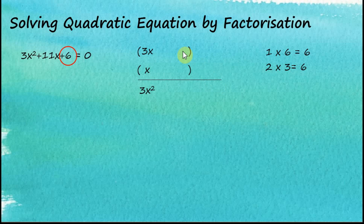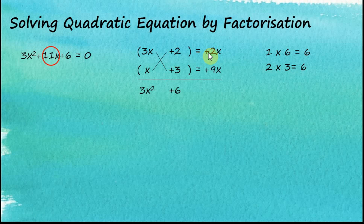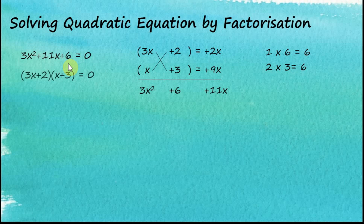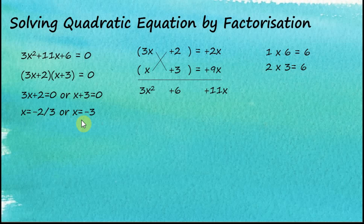So let's put 2 and 3 into the brackets. The product of these two factors is positive 6 — exactly what we want. Cross multiplications give positive 2x and positive 9x, and their sum is positive 11x — exactly what we want. Therefore, these two expressions are the factors. Solving: 3x plus 2 equals zero or x plus 3 equals zero, giving x equals negative 2 over 3 or x equals negative 3.